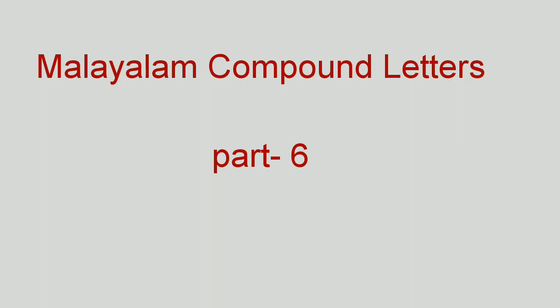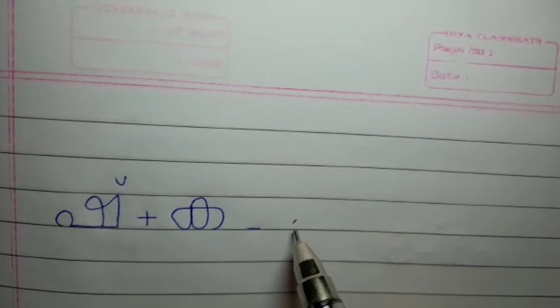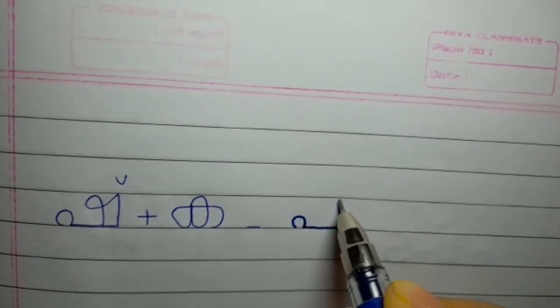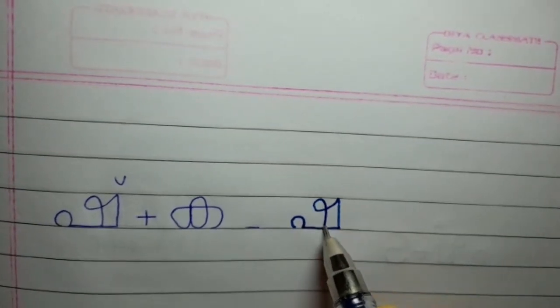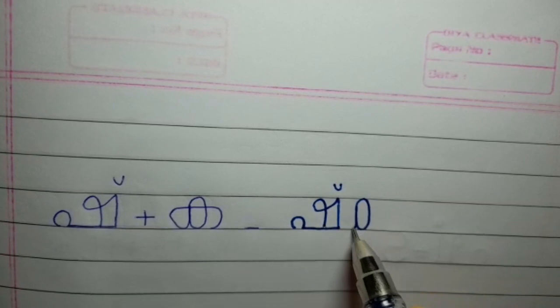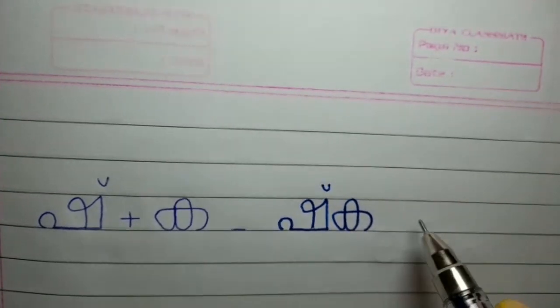Malayalam Compound Letters Part 6: She plus Ka, forming the compound 'Shka'.